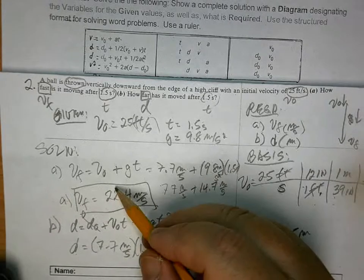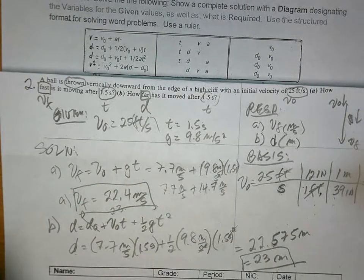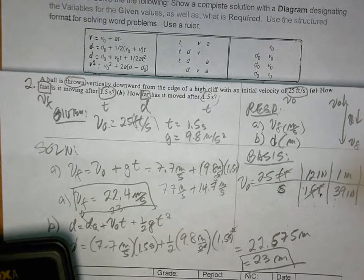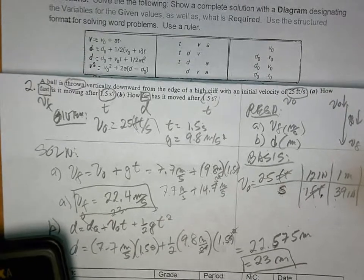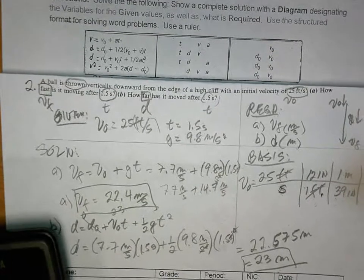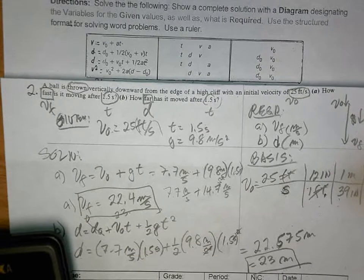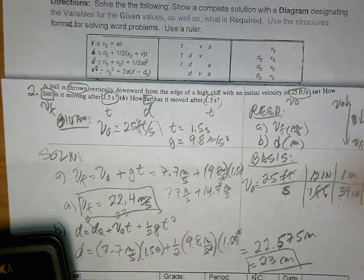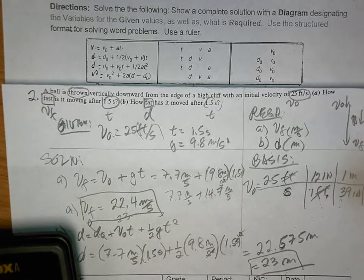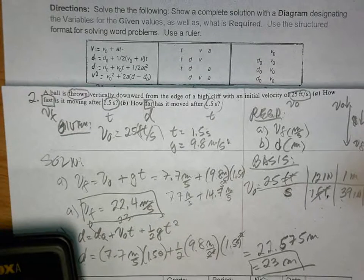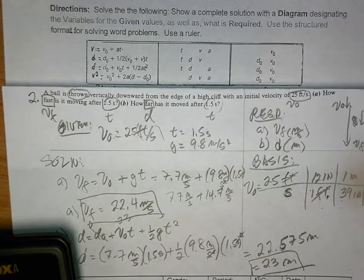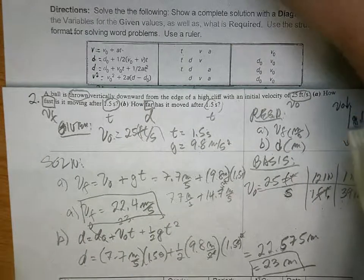All right. Let's verify that. 1.5 times 1.5 times 9.8 divided by 2, plus 7.7 divided by 2 times 1.5. That's correct. Hopefully.